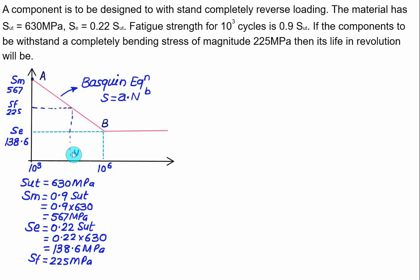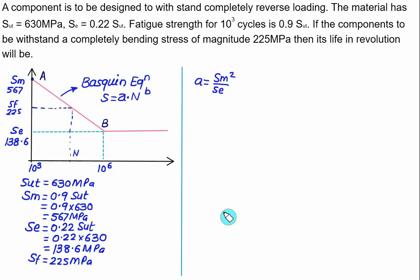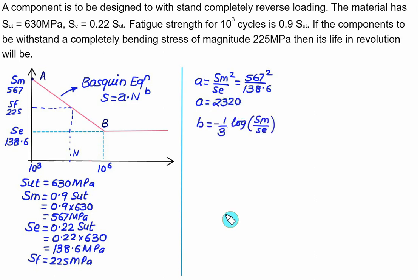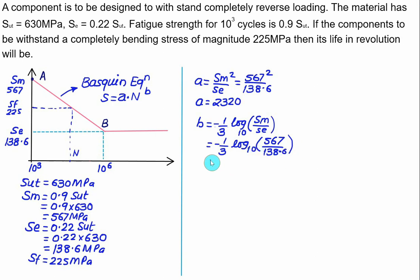Find constants A and B. Constant A = SM² / SE = 567² / 138.6. Solving gives A ≈ 2320. Constant B = −(1/3) × log₁₀(SM / SE) = −(1/3) × log₁₀(567 / 138.6). Use base 10 for the logarithm. You will get B = −0.2039.